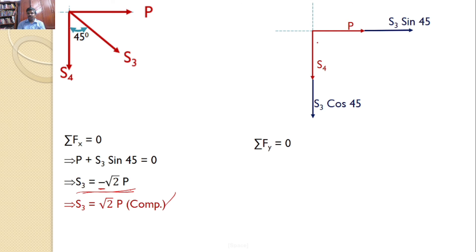Now Sigma FY equals 0. Two forces act in the same direction. Then you can write S4 plus S3 cos 45 equals 0. Already you know that S3 equals minus root 2 times P. So S4 minus root 2 times P cos 45 equals 0, or you can say S4 equals P. It is tensile. That is, the initial assumed direction, tensile, is true.